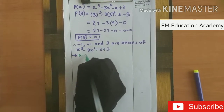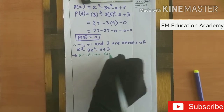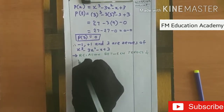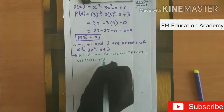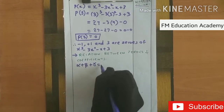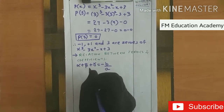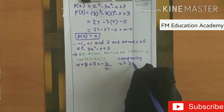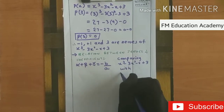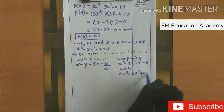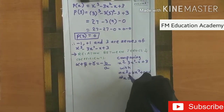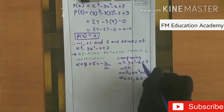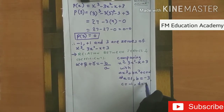Next step: relationship between zeros and coefficients for a cubic polynomial — earlier we did this for quadratic polynomial. We compare x³ minus 3x² minus x plus 3 with the standard form ax³ plus bx² plus cx plus d. The coefficient of x³ is 1, so a equals 1. The coefficient of x² is minus 3, so b equals minus 3. The coefficient of x is minus 1, so c equals minus 1. The constant term is plus 3, so d equals 3. Also, alpha is minus 1, beta is plus 1, and gamma is 3.